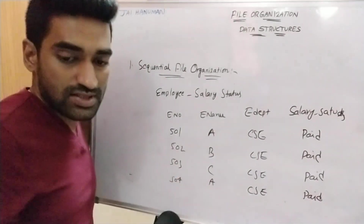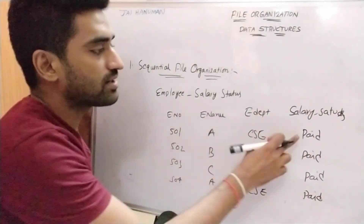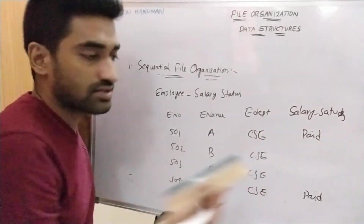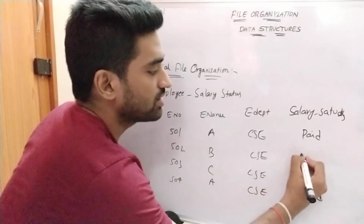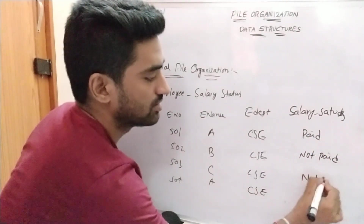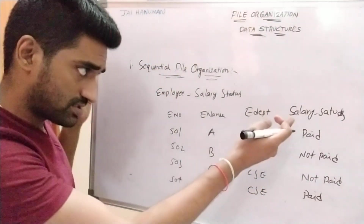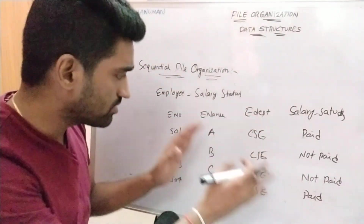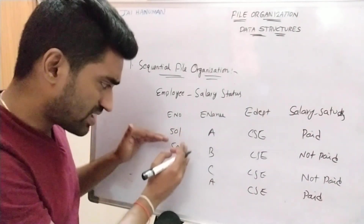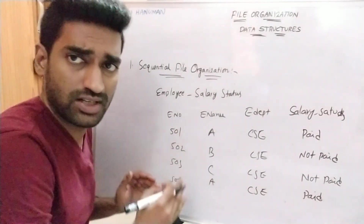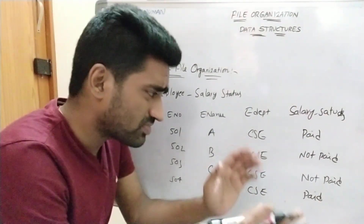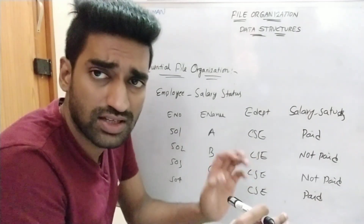After completion of one month: 501 salary is paid so status is updated. For suppose 502 and 503 salaries are not paid, so status is 'not paid' for this month. For personal status updation, we process the records sequentially — that is, one by one. These are simple examples for sequential file organization.